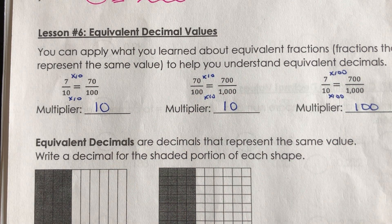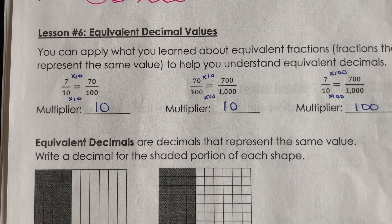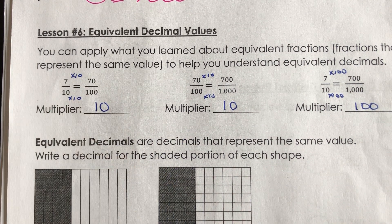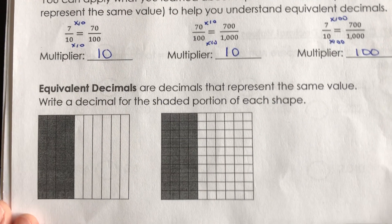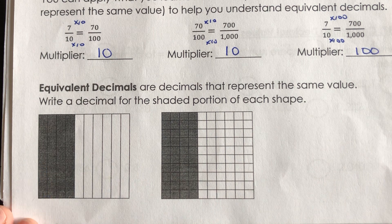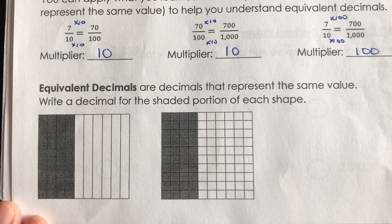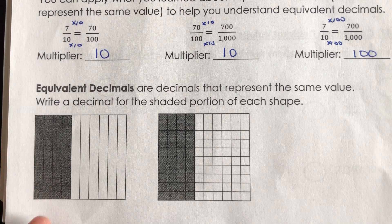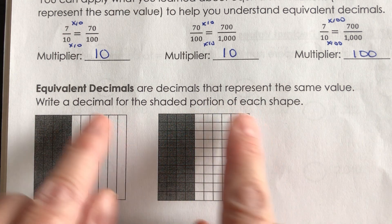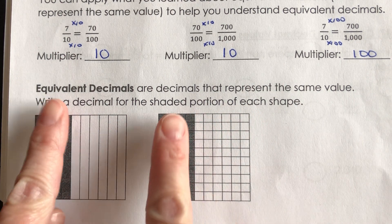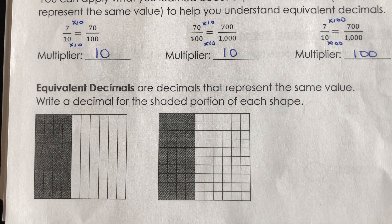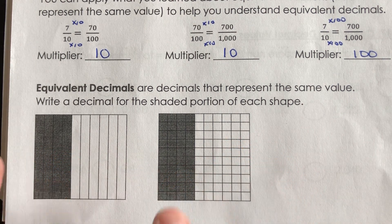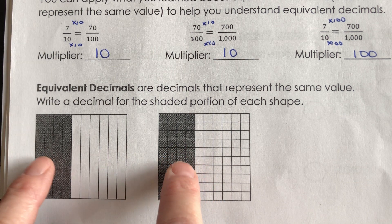Equivalent decimals are decimals that represent the same value. I ask you to write a decimal for the shaded portion of each shape. Not only can you have equivalent fractions — fractions that look different but have the same value — that same applies for decimals. So what I want us to do is write a decimal value for the shaded portion of each of these shapes. I'm hoping you're noticing that the whole is the same size, and that the same amount of each is shaded.